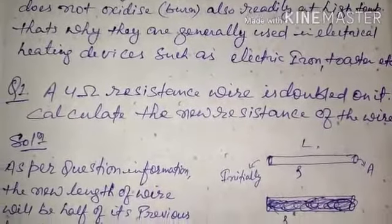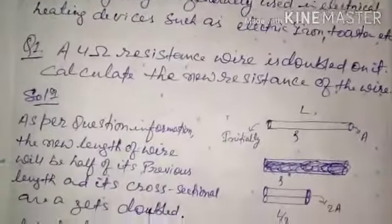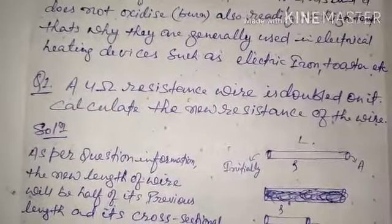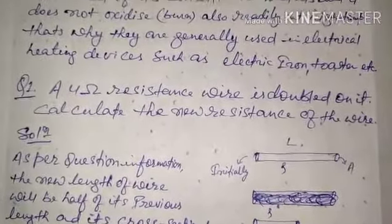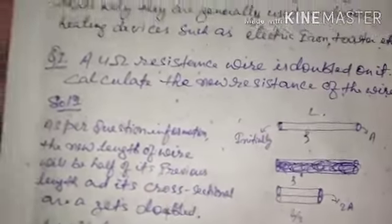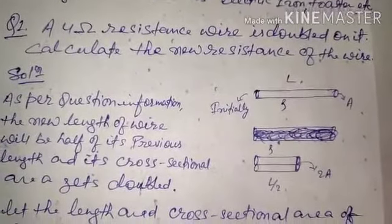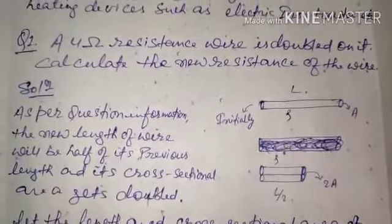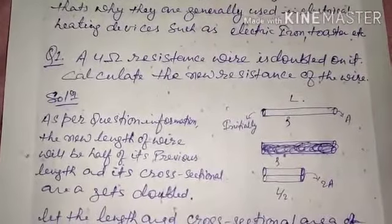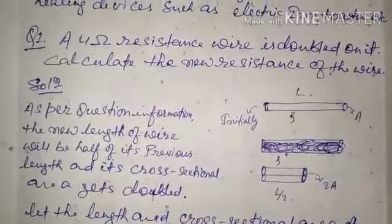Because alloys do not burn or oxidize at high temperatures, they are generally used in electrical heating devices such as electric irons and toasters. This answers the question of why we use alloys in electric heaters and irons. Based on this theory, I have also given some questions in the assignment for you to solve to get more ideas about the topic.